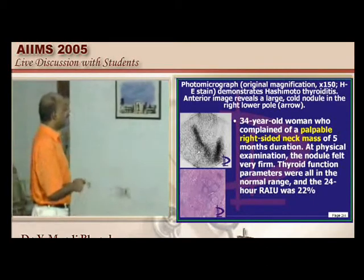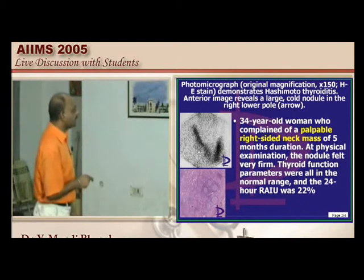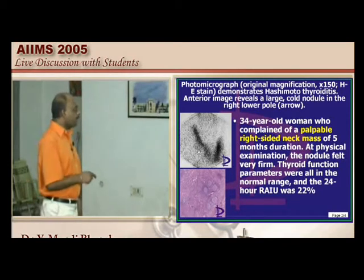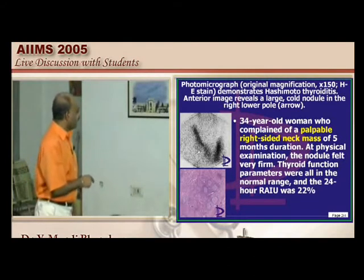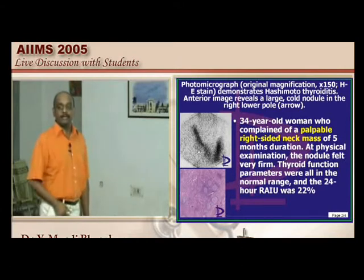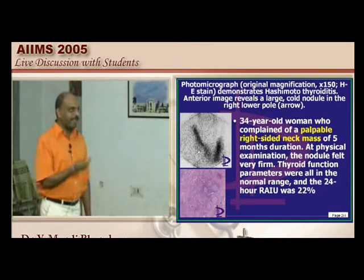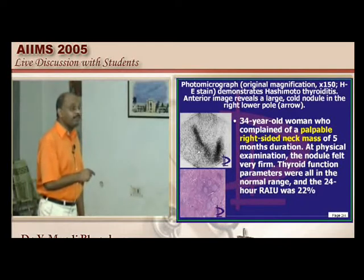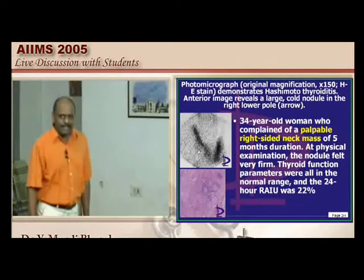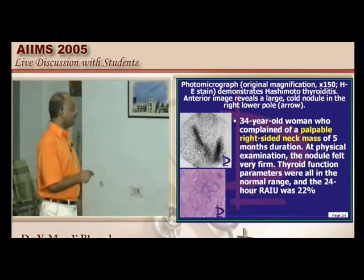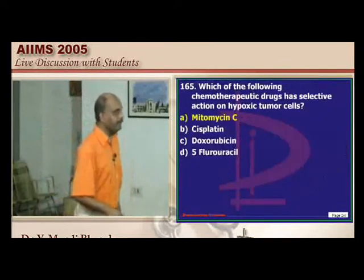A 34-year-old woman presents with a palpable right-sided neck mass of 5 months duration, very firm on examination, with normal thyroid function. Radioactive iodine uptake is decreased to 22%. This is a classical feature of Hashimoto's thyroiditis — in the late stage the radioactive iodine uptake becomes diminished.